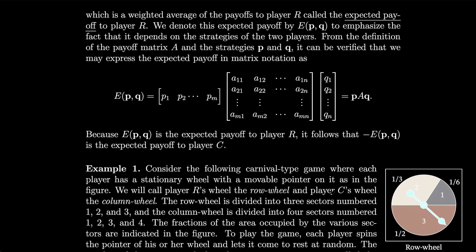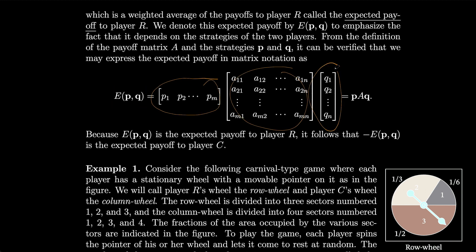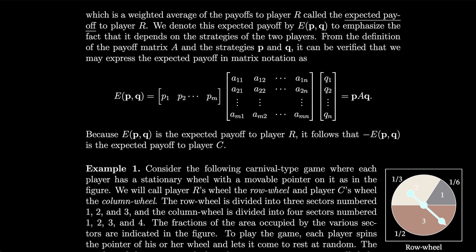We denote the expected payoff by e(p, q) to emphasize the fact that it depends on the strategies of the two players. From the definition of the payoff matrix A and the strategies p and q, it can be verified that we may express the expected payoff in matrix notation as e(p, q) = p times A times q. Because e(p, q) is the expected payoff to player R, it follows that minus e(p, q) is the expected payoff to player C, because it's a zero-sum game.